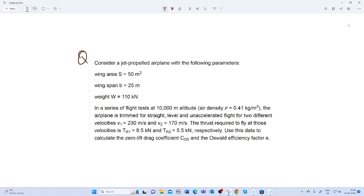For two different velocities: v1 equals 230 meters per second and v2 equals 170 meters per second. The thrust required to fly at those velocities is TR1 equals 8.5 kilonewtons and TR2 equals 5.5 kilonewtons respectively. Use all these data to calculate the zero lift drag CD0 and the Oswald factor.